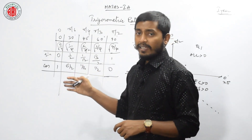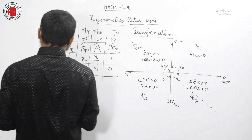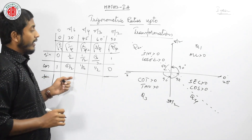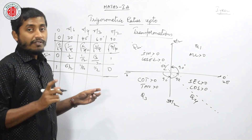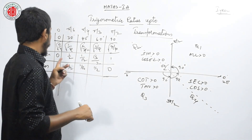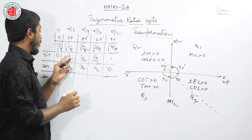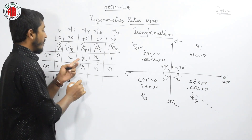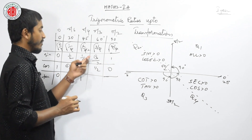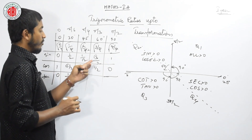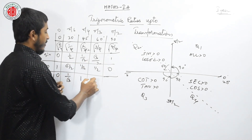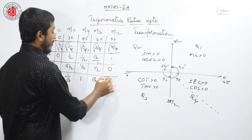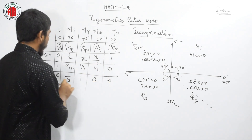The next ratio is tan. Tan is the ratio of sin and cos. So: tan 0 = 0/1 = 0, tan 30 = (1/2)/(root 3/2) = 1/root 3, tan 45 = (1/root 2)/(1/root 2) = 1, tan 60 = (root 3/2)/(1/2) = root 3, and tan 90 = 1/0 which is undefined.